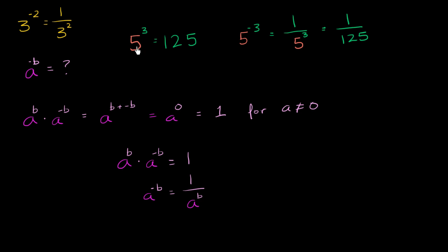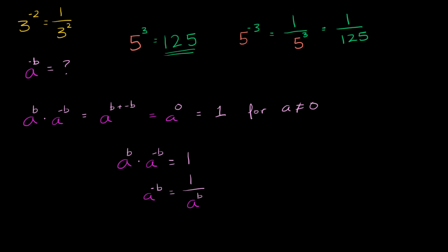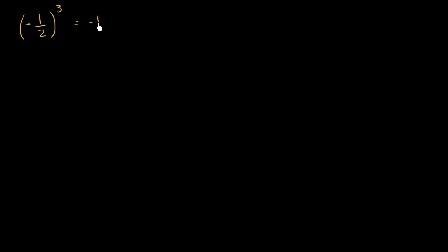This is really interesting: 5 to the third is a reasonably large number, while 5 to the negative 3 is still a positive number, but a very small number — it's 1/125. Now let's do two more examples. If I were to take negative 1 half and raise it to the third power, that's negative 1 half times negative 1 half times negative 1 half, which equals negative 1 over 8.